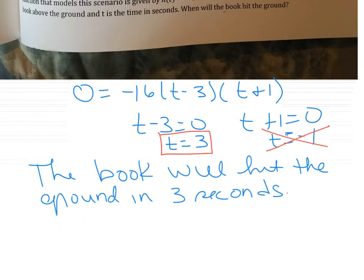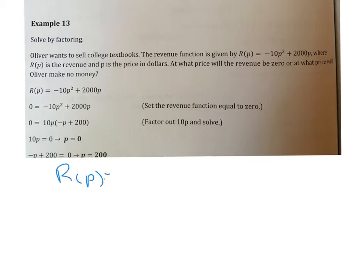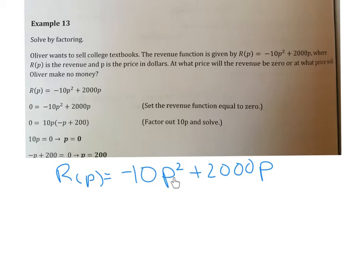Don't forget to put your units on there. Example 13, solve by factoring. Oliver wants to sell college textbooks. The revenue function is r of p equals negative 10p squared plus 2,000p, where r of p is the revenue and p is the price in dollars. At what price will the revenue be zero, or at what price will Oliver make no money? We replace zero for revenue, which makes our quadratic equation equal to zero so we can start factoring.